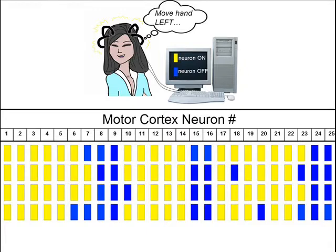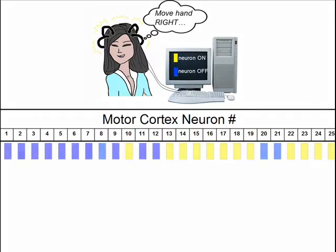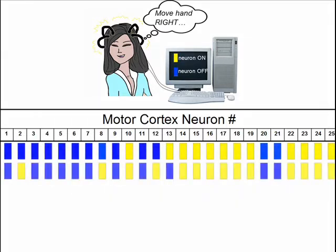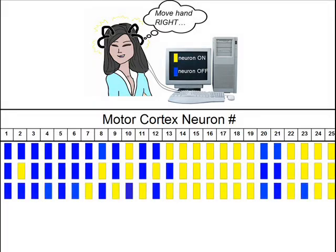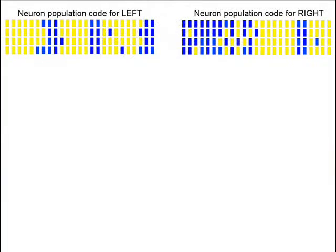And then, when she thinks 'move hand to the right,' they go all abuzz and fire — to the right, to the right. And you have a code from her neurons, and it's quite a sight. Now we know her code for move left and move right.